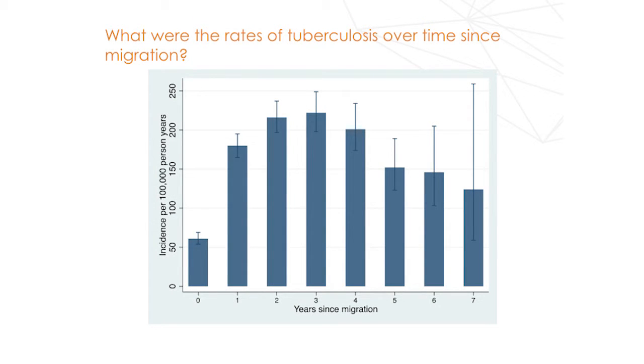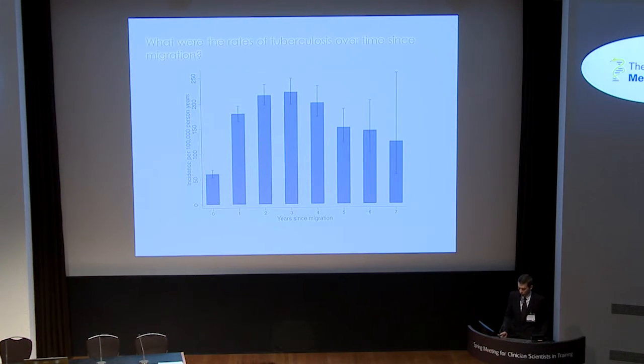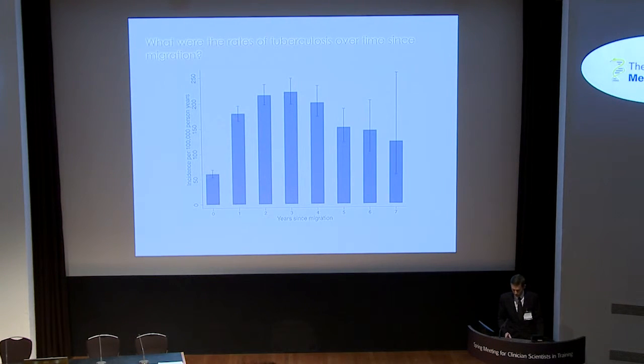Beyond incidence rates, we want to know when TB is occurring in order to think about how to design and improve the screening programme. For the first time, we're able to look at tuberculosis incidence over time since migration. In the first years since migration there's a dip, and it peaks at three years — probably because we're removing the prevalent cases through the screening programme. The peak risk is at three years, and it starts to decline after that, though it's still relatively high after seven years, although the power of the study at that point becomes rather weak, as shown by the wide confidence intervals.